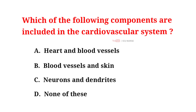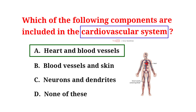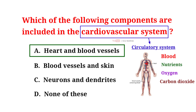Which of the following components are included in the cardiovascular system? A. Heart and blood vessels. B. Blood vessels and skin. C. Neurons and dendrites. D. None of these. And the correct answer is A. Heart and blood vessels. The cardiovascular system, also known as the circulatory system, is responsible for transporting blood, nutrients, oxygen, carbon dioxide, and hormones throughout the body.